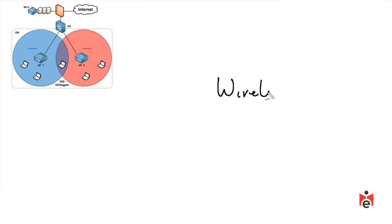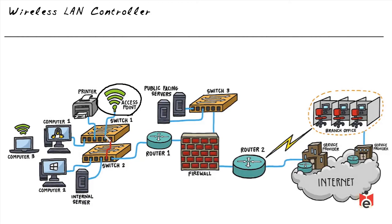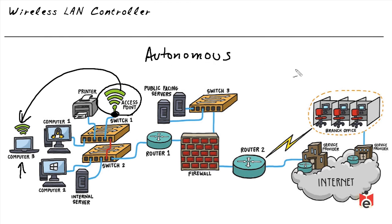Wireless is very important today, and a wireless LAN controller makes sense in larger wireless environments. Currently, one access point is connected via ethernet to the switch, providing wireless access for devices on the topology. With a single access point, it's manageable to connect and configure it directly — specifying security type, frequency, and channel. When a single access point is managed independently like this, it's referred to as an autonomous access point.